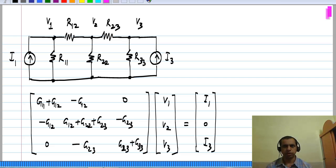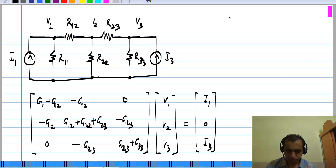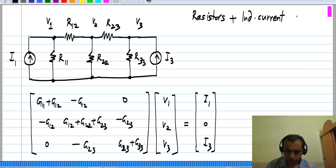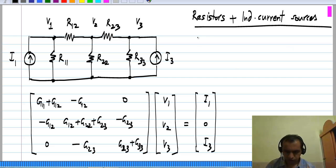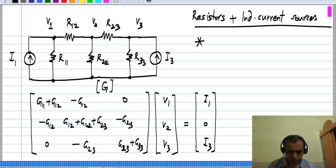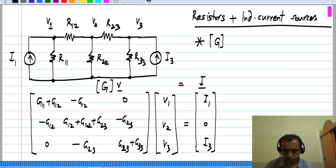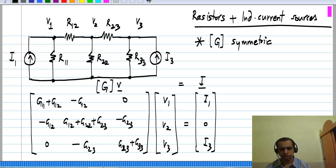The first case we took was the simplest one for nodal analysis — when we had only resistors and independent current sources in the circuit. Here is the circuit we studied earlier. In this case, we set up the equations as a G matrix times the unknown vector of voltages equal to the vector of sources. The G matrix is symmetric. By inverting the G matrix you can find all the node voltages and from there you find everything else.